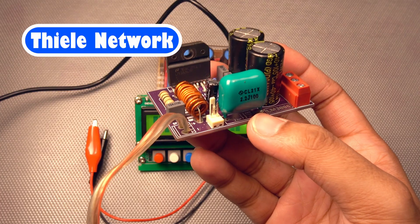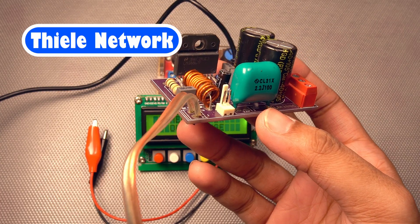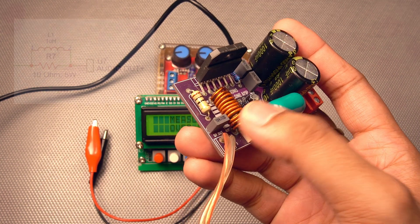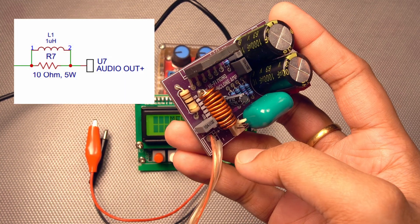Now, these TL networks are very important components for these LM3886 boards. And this is mainly having one resistor, a 10 ohm resistor and one inductor coil,